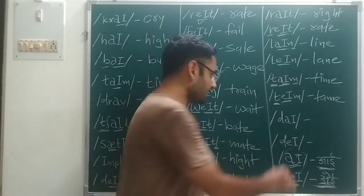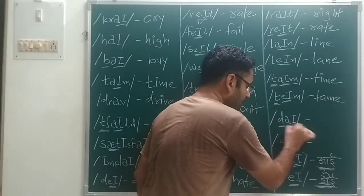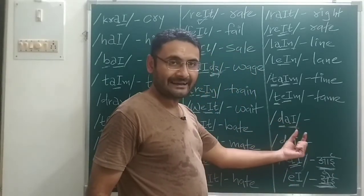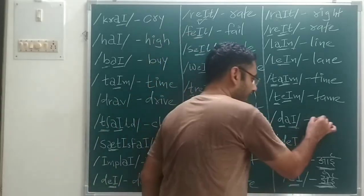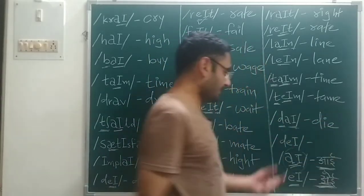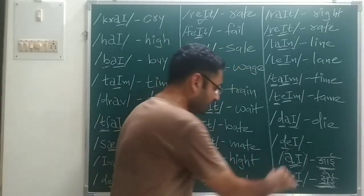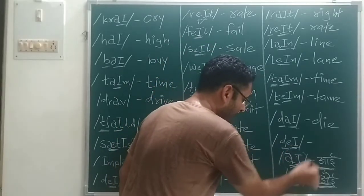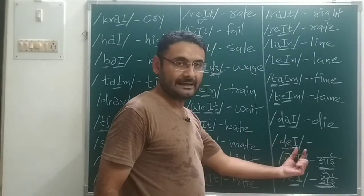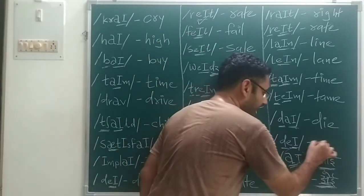Next: the sound — that is your I sound — D, I — that gives us 'die'. Last one: the sound E-I, means A — D, A — that gives us 'day'.